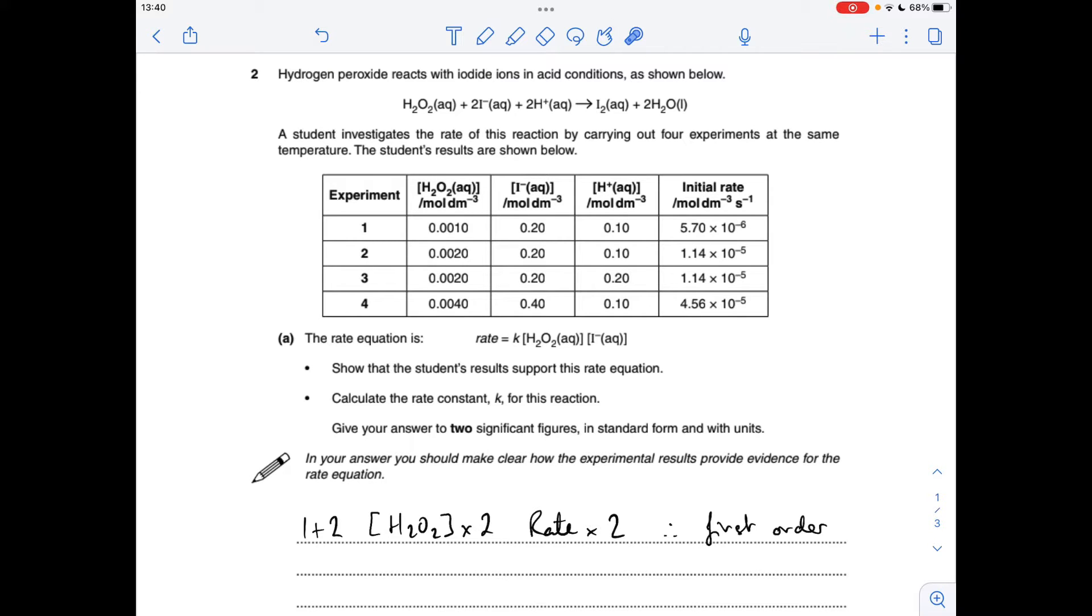If we look at 2 and 3 now, you can see that these are held constant. So we can see the effect of the change in the H+ concentration. You can see that's doubled. The rate hasn't changed. So that's 0 order. So I've just put that there. Instead of putting rate times 1, you could put rate unchanged if you want, but what I've written is fine.